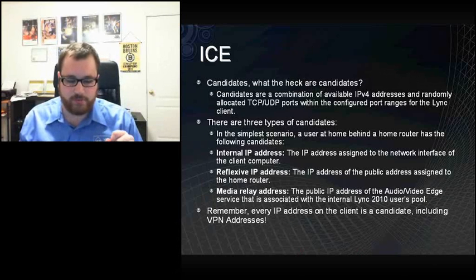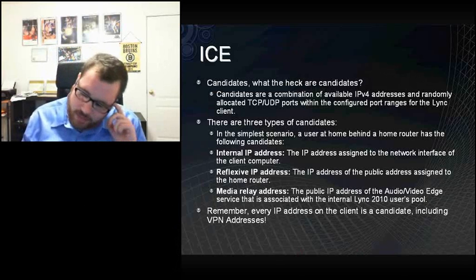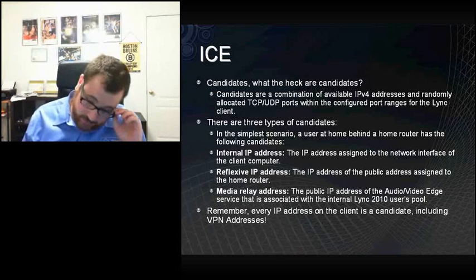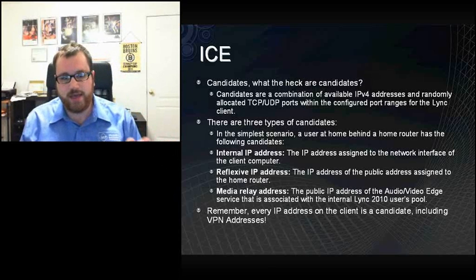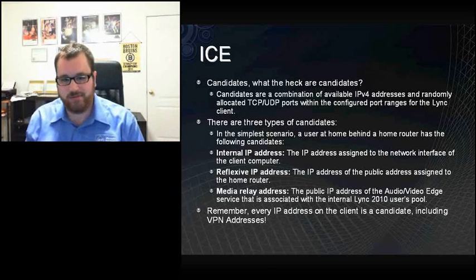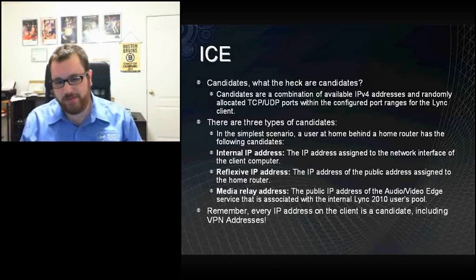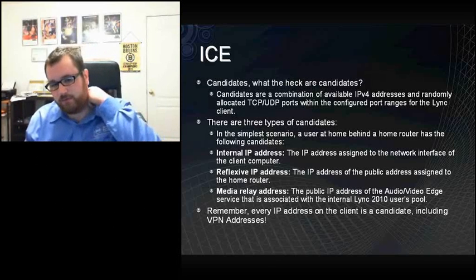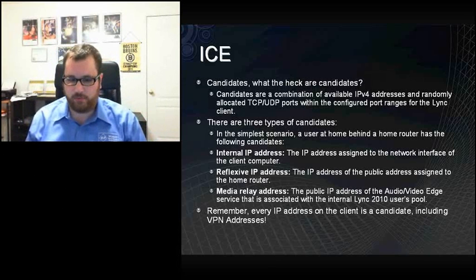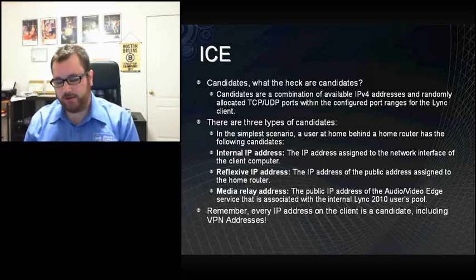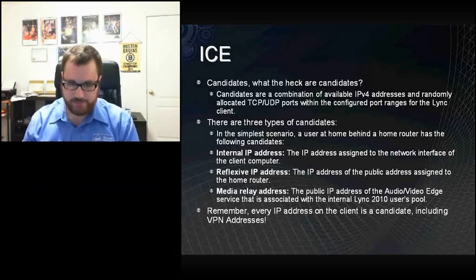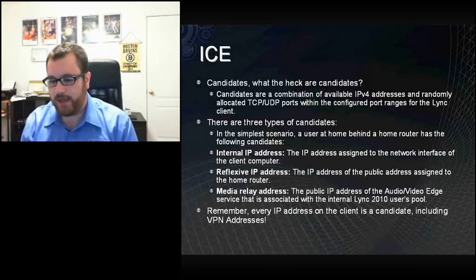Candidates are a combination of available IP addresses and randomly allocated TCP or UDP ports within the configured port ranges for the link client. You can configure a minimum of 20 per modality port ranges — whether you're doing QoS or want to restrict the port range. Those candidates on a client are allocated out of that port range, which is typically the 50,000 high-end port range.